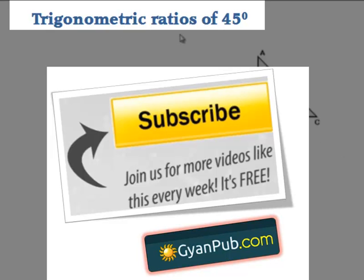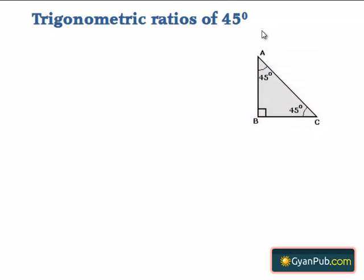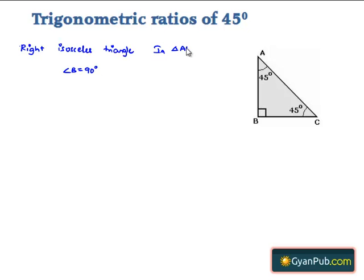Let us discuss the procedure to find the trigonometric ratios of 45 degrees. In order to find the trigonometric ratios of 45 degrees, let us consider an isosceles right triangle ABC in which angle B is equal to 90 degrees. As it is a right isosceles triangle, the other two angles will be equal to 45 degrees — that is, angle A is equal to angle C is equal to 45 degrees.